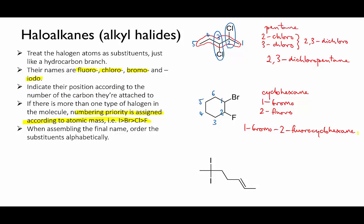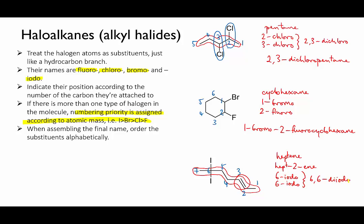Okay, last example. The longest chain is seven carbons, and there is a double bond, so we begin by calling it heptene. Next we number the chain. There's a functional group changing the suffix — the alkene — so we number so that the alkene gets the lowest possible number. That means numbering from the right, giving us hept-2-ene. Continuing the numbering, the two iodine atoms are joined onto carbon number six. So our final name is 6,6-diiodohept-2-ene.